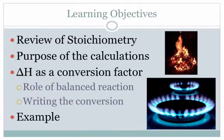To get into the actual video itself, let's talk about the learning objectives. First, we're going to start with a review of stoichiometry — I'll have a quick stoichiometry problem for you to try. We're going to be modifying those stoichiometry calculations today to predict energy values as opposed to gram or volume of gas values. We'll also talk about the purpose of these calculations, and the real goal is realizing that delta H values, that thing we tag on the end of our reactions, is really a new conversion factor.